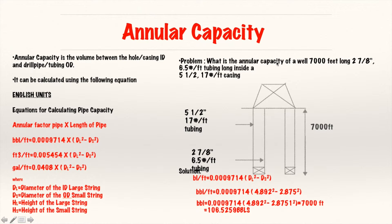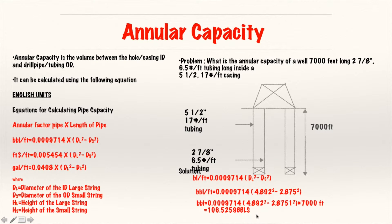What is the annular capacity of a well 7,000 feet deep with 2⅞ inch, 6.5 pound tubing inside a 5½ inch, 17 pounds per foot casing? For the tubing we use the OD, and for the 5½ inch casing we use the ID. Plugging in the OD of the small string and the ID of the large string, subtracting and multiplying by 7,000 feet gives an annular capacity of 106.526 barrels.